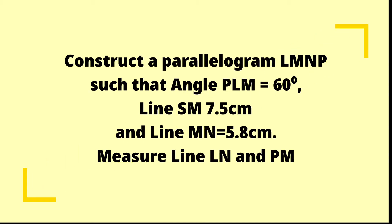Hello, good morning viewers. As part of our lesson for construction, in this tutorial we want to construct a parallelogram LMNP such that angle PLM is 60 degrees, line LM is 7.5 centimeters, and line MN is 5.8 centimeters. We are also asked to measure the distance from L to N and the distance from P to M. As always, we are going to start with a rough sketch.